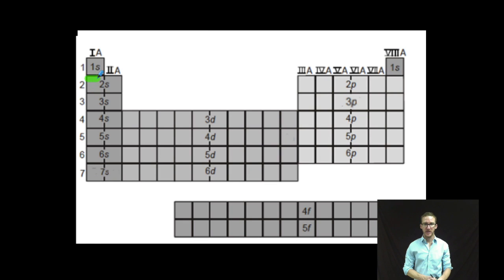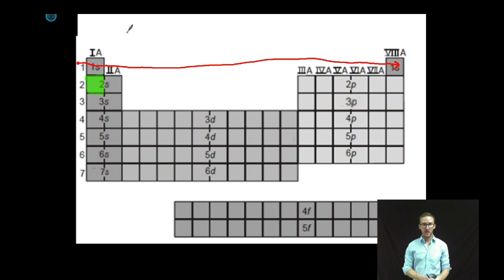Again, I'm going to use this orbital periodic table. I'm going to highlight the element that I'm trying to build the electron configuration for. I'm going to start at the very top of the periodic table and move through the rows. I'm going to use a line to indicate the first orbital that I move through. In this case, it's the 1s orbital.